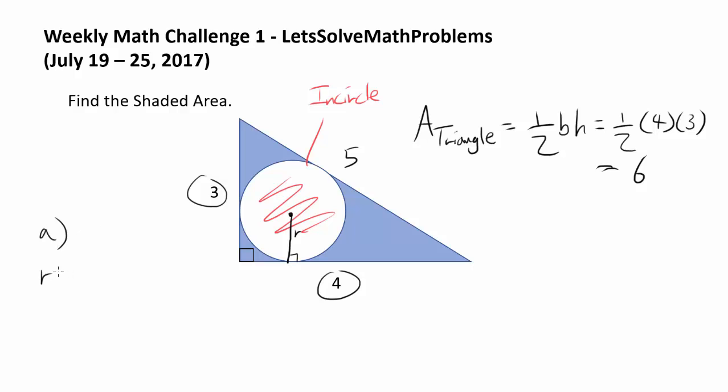First way is to find inradius using the formula a plus b minus c over 2. This only applies for right triangles. So let's try this out. In this case, c is the hypotenuse and a and b are two other sides. So we have 3 plus 4 minus the hypotenuse of 5 divided by 2 which gets us 7 minus 5, 2 over 2 which is 1.